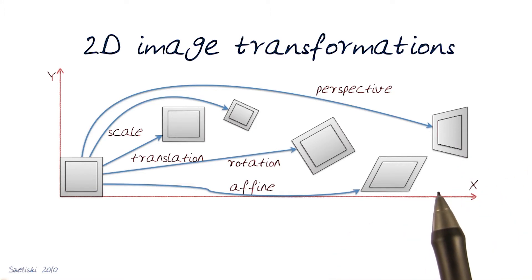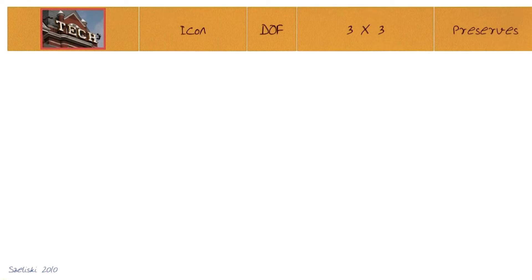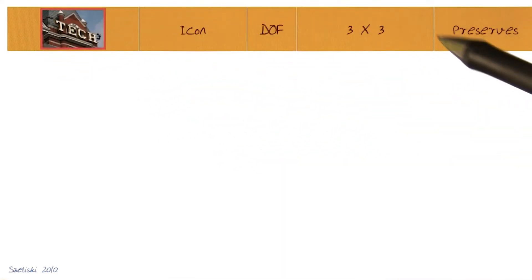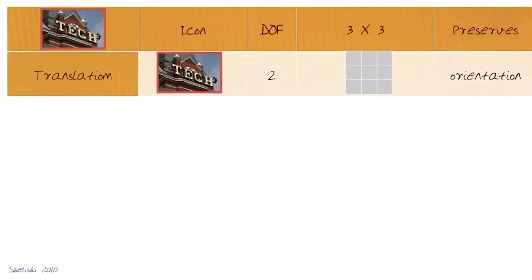So basically, let's summarize all of them. I'm going to show this with a simple table here. We'll look at how we actually want to do the transformation, what the three by three looks like, and what kinds of things it preserves.